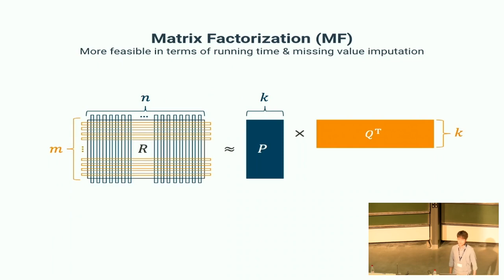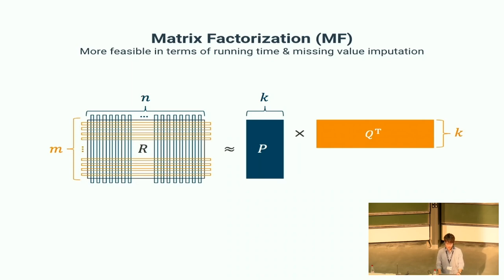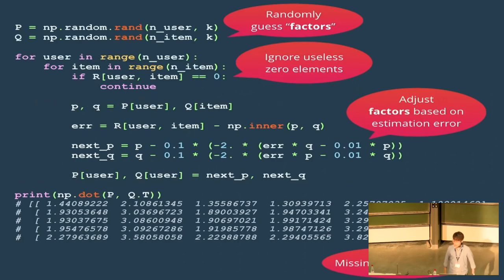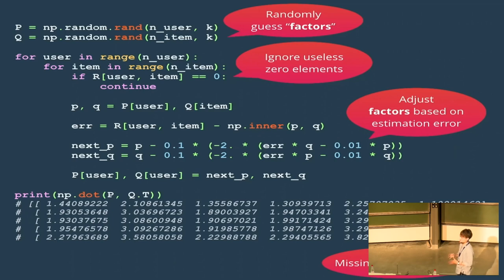The third example is matrix factorization, which is more like machine learning. The basic concept is very close to SVD — we want to decompose into characteristic matrices using a certain operation, but it's written in more machine learning style code. In Python, we first randomly initialize factor matrices P and Q, then by iterating each element in the original matrix we update the factor matrices. Eventually, similarly to SVD, we can get predictions and make recommendations based on which user-item pair is most promising.